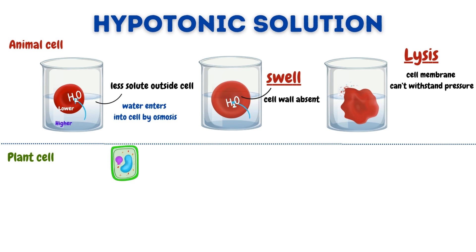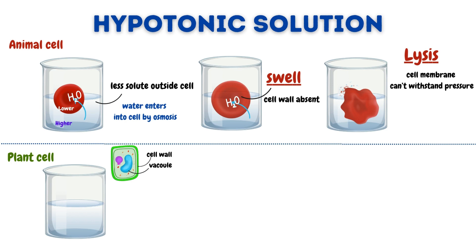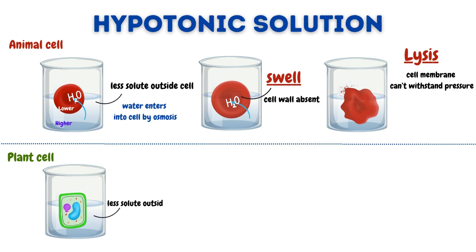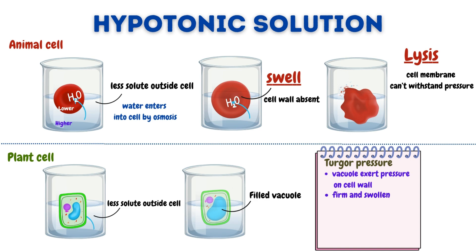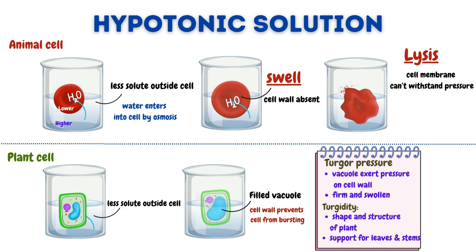This situation is different for plant cells because of the presence of a rigid cell wall surrounding the cell membrane and a large central vacuole filled with water and nutrients. Most plants live in hypotonic environments. When a plant cell is placed in a hypotonic solution, where the outside has less solute compared to inside the cell, the concentration gradient favors the movement of water into the cell by osmosis, filling the central vacuole and exerting pressure on the cell wall. This pressure, known as turgor pressure, causes the cell to become firm and swollen. The cell wall prevents the cell from bursting, and this state of turgidity is essential for maintaining the shape and structure of the plant as well as providing support for leaves and stems.